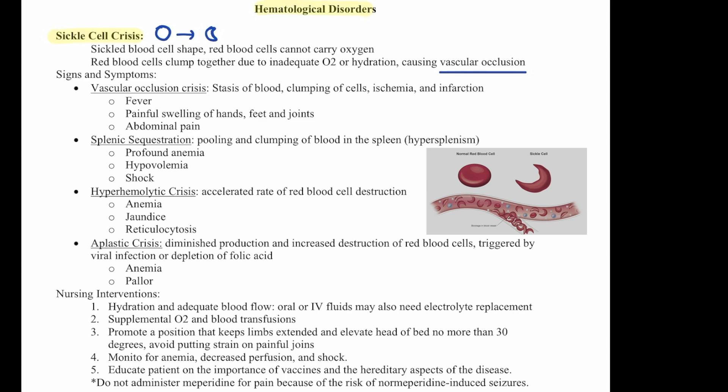Nursing interventions include hydration and adequate blood flow with oral or IV fluids. They may also need electrolyte replacement, supplemental oxygen, and blood transfusions. We should promote a position that keeps limbs extended and elevate the head of the bed no more than 30 degrees. Avoid pulling, straining, or painful joints. Monitor for anemia, decreased perfusion, and shock. Educate patients on the importance of vaccines and the hereditary aspects of the disease. We do not administer meperidine for pain because of the risk of normeperidine-induced seizures.